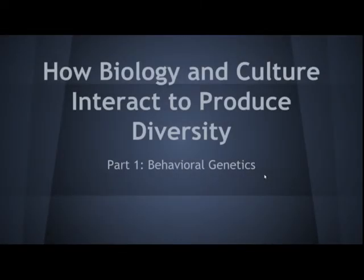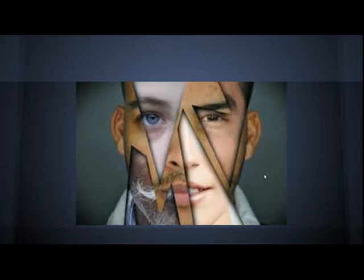This is part one of a two-part series where I briefly talk about how biology and culture interact to produce diversity. They're not the only two factors, but they're two quite important ones. When we talk about diversity, we need to talk about these two. Generally when we discuss diversity we focus on environmental and cultural differences, but it's obvious that biology is responsible for a fair amount of the diversity we see.